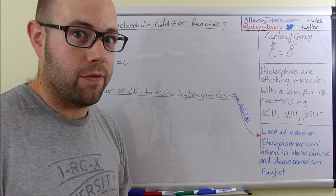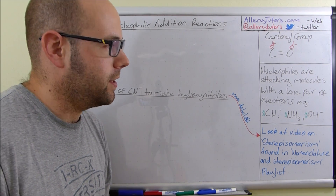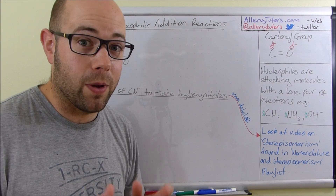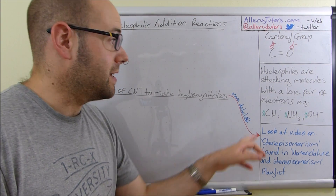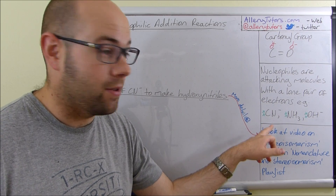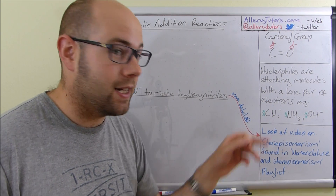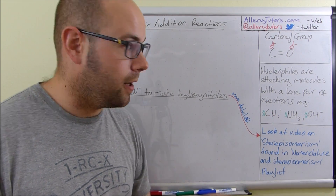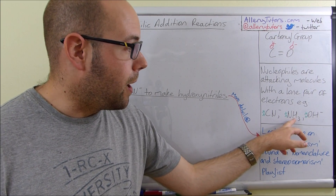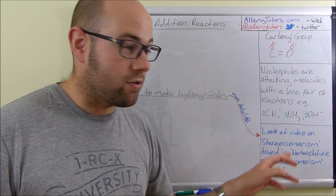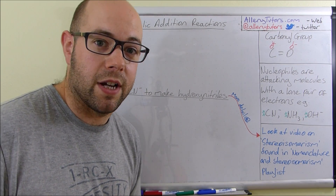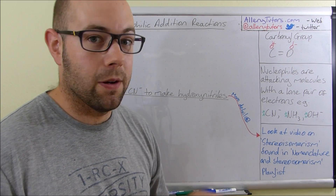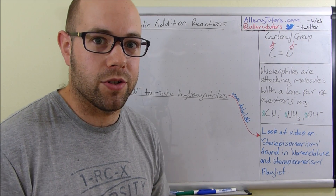We need to know what a nucleophile is. Nucleophiles are attacking molecules and what they have is a lone pair of electrons. Things like cyanide, CN minus — the lone pair sits on the carbon — ammonia, NH3, and OH minus, hydroxyl groups. For OH minus, the lone pair sits on the oxygen.